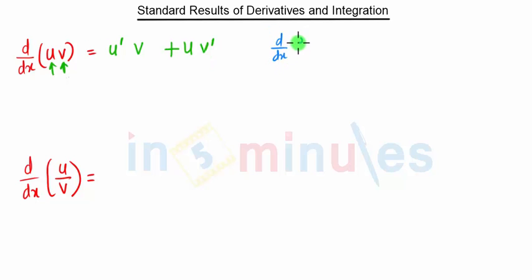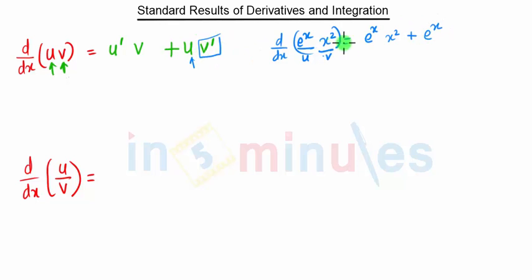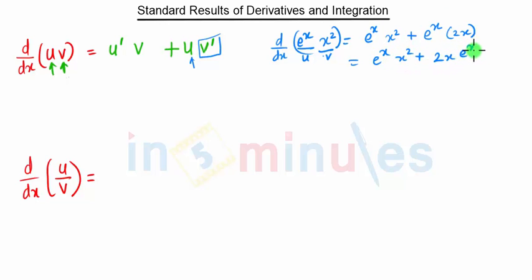For example, to find the derivative of e^x · x², we apply the u·v rule. The derivative of u (e^x) is e^x, and we keep v (x²) as it is, plus we keep u (e^x) as it is and take the derivative of v (x²), which gives 2x. So the result is e^x · x² + 2x · e^x.